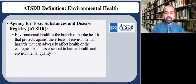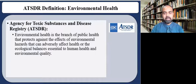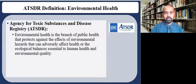Another very important agency in the United States is ATSDR, which stands for Agency for Toxic Substances and Disease Registry. According to this agency, environmental health is the branch of public health that protects against the effects of environmental hazards that can adversely affect health or the ecological balances essential to human health and environmental quality.